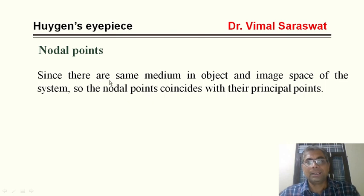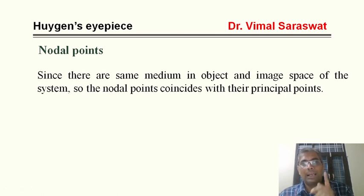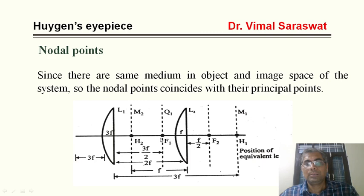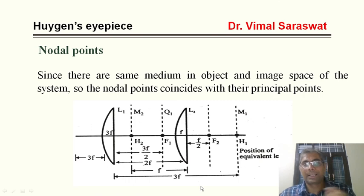Now, nodal points. Since the object and image spaces are in the same medium, the nodal points coincide with the principal points: N1 coincides with H1 and N2 coincides with H2. This is our equivalent diagram of Huygens' eyepiece, showing the positions of all cardinal points.